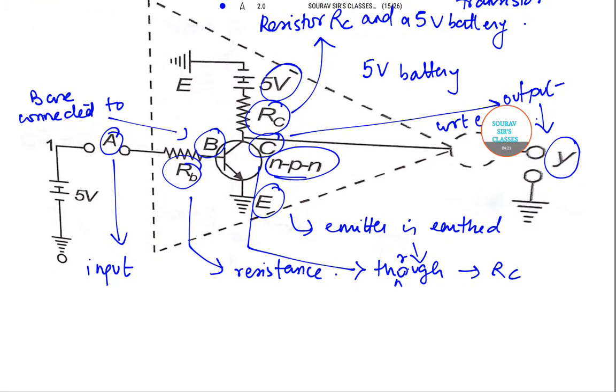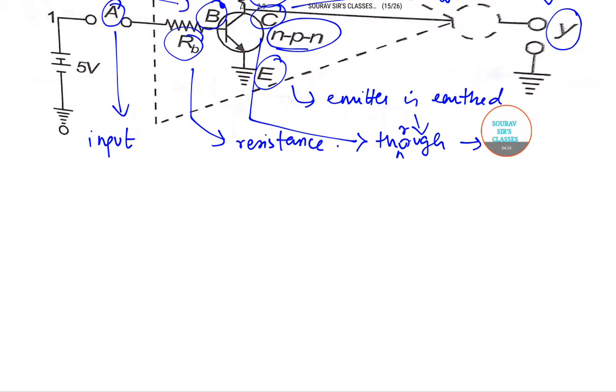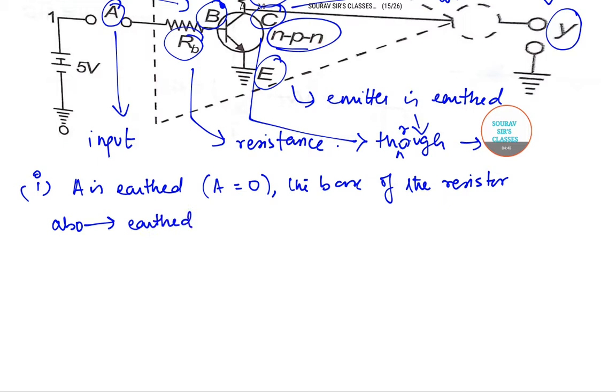Now we will try to understand the operation of NOT gate, and this can be done if we cover two cases. Number one, the first case: when A is earth, or it simply means that the value of A equals zero. The base of the transistor also gets earthed. Base emitter junction is actually not forward biased.